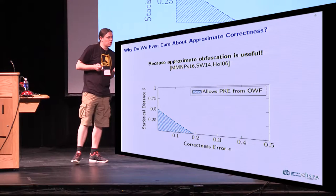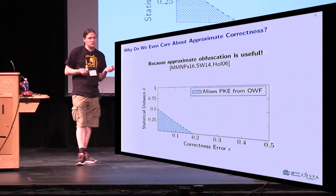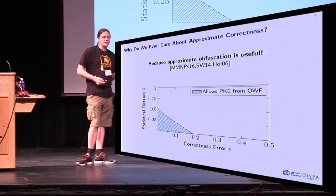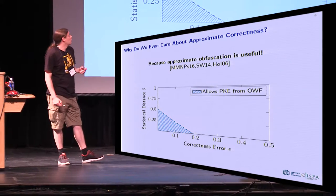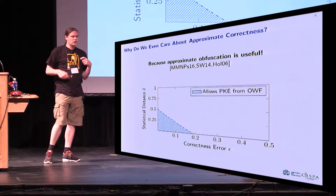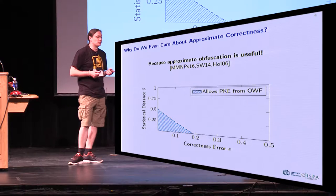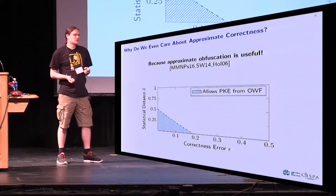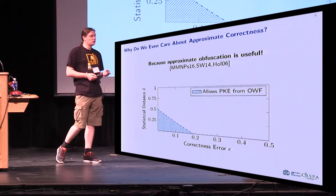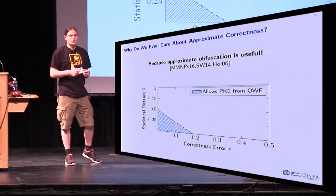The next obvious question might be why we even care about approximate correctness, because an approximately correct obfuscator might seem like a relatively useless thing — it does not even guarantee that it is correct on any fixed input. However, it turns out that it is still useful. In particular, it was observed that you can still construct public key encryption from one-way functions if you have statistically secure approximate I.O. This is basically done by applying the construction of Hohenstein-Waters that usually constructs public key encryption from one-way functions and I.O. to an approximate I.O., and then amplifying using an amplification technique due to Hohenstein to a full public key encryption scheme.